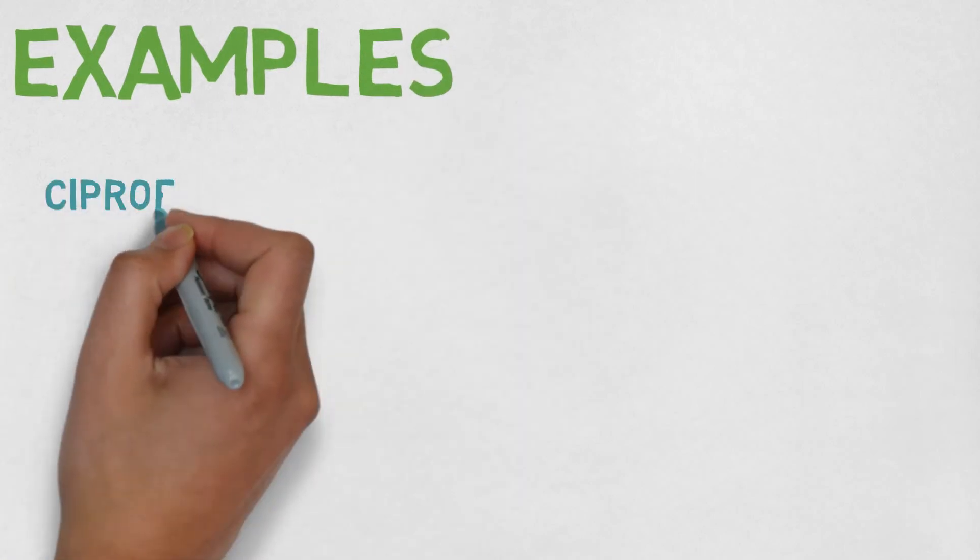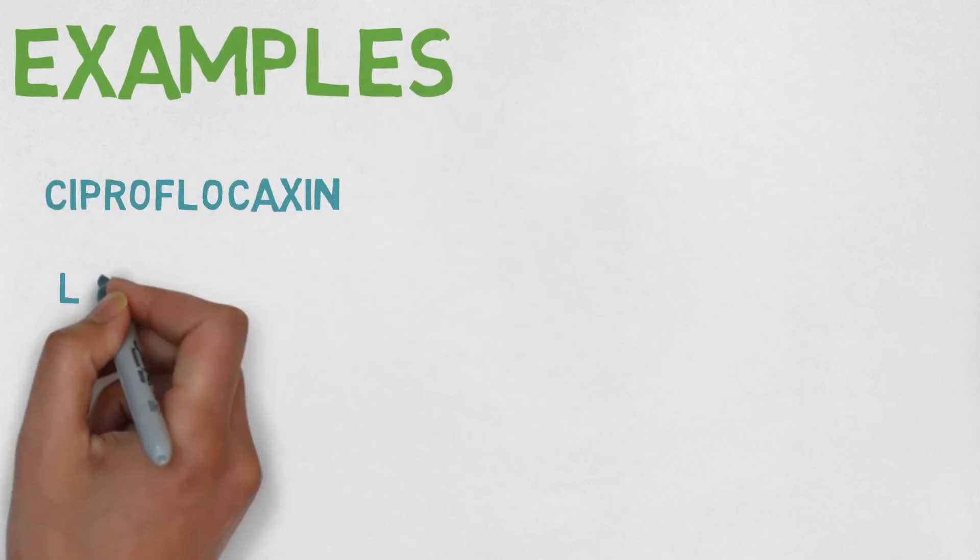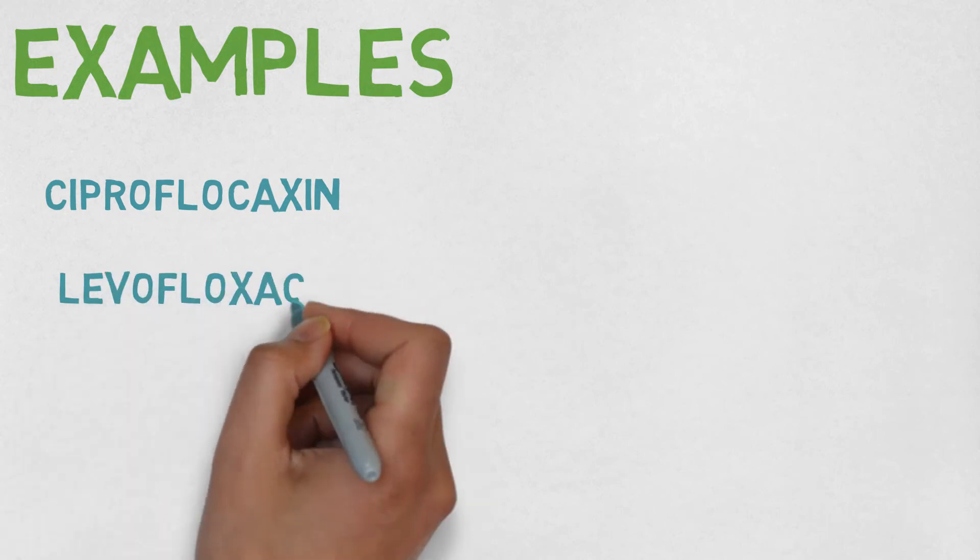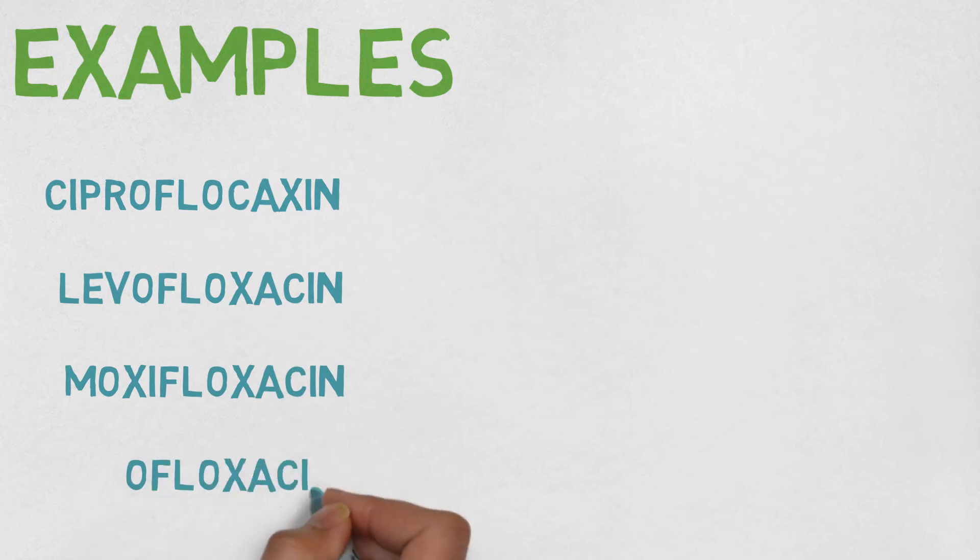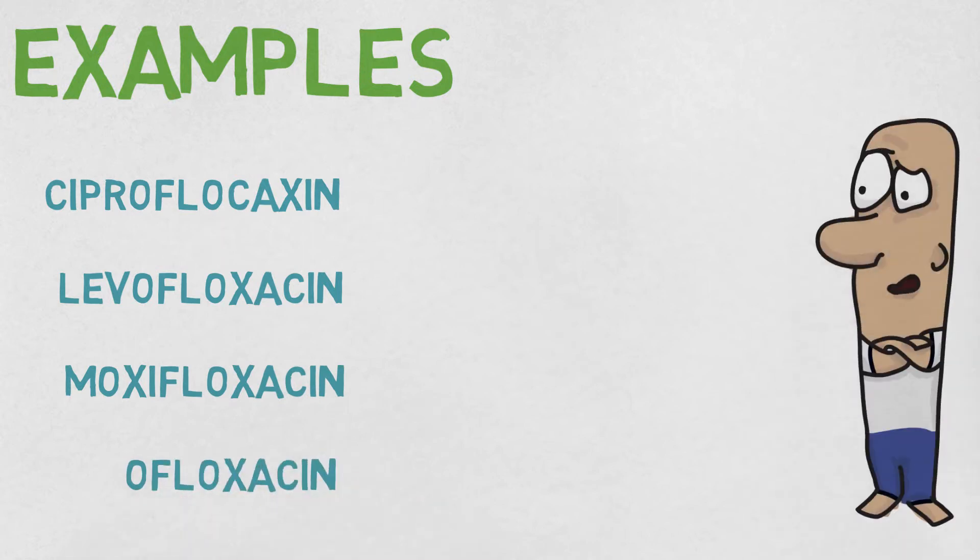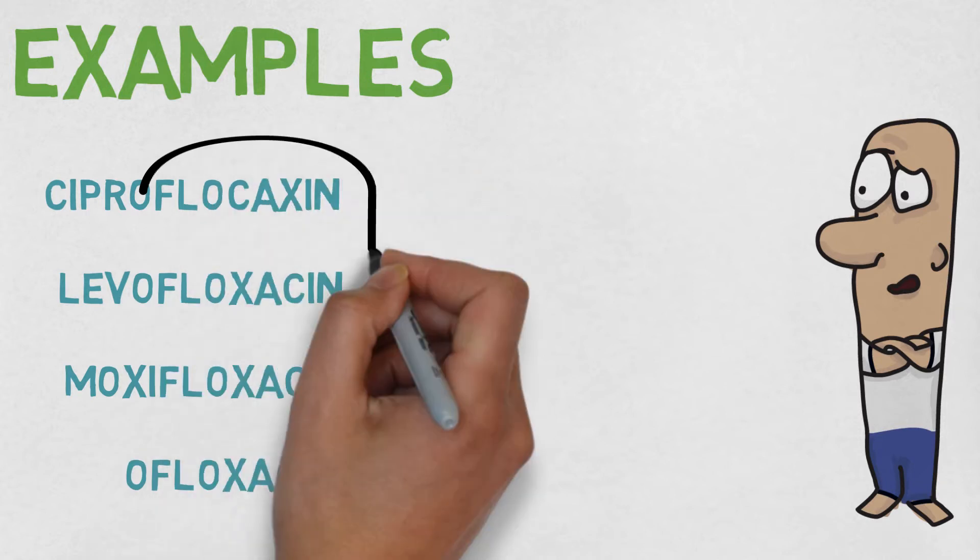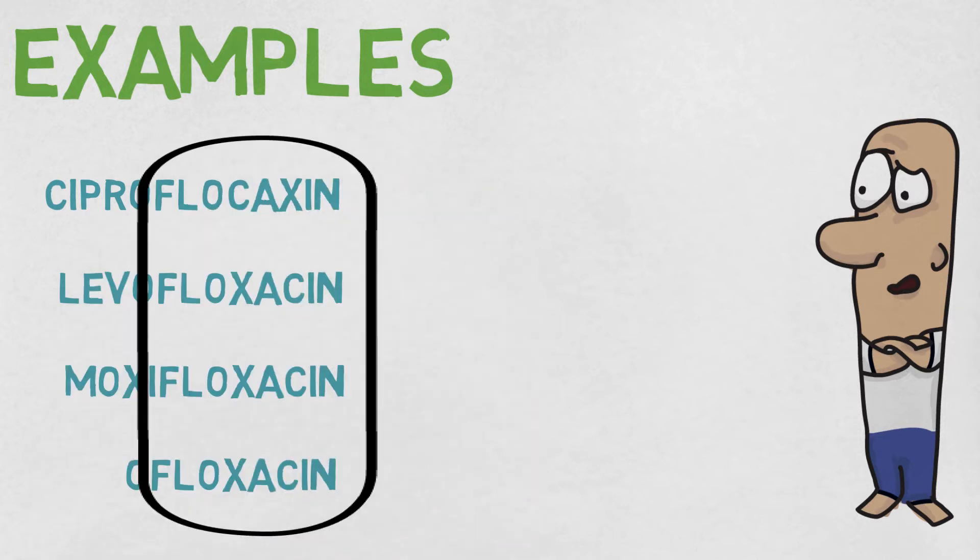Examples of fluoroquinolones include ciprofloxacin, levofloxacin, moxifloxacin, and ofloxacin. You can recognize any fluoroquinolones through noticing that they all end with the word floxacin.